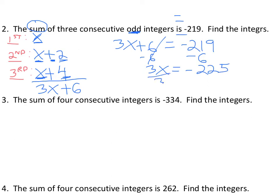Then we divide both sides by 3. And let's put this in the calculator. So negative 225 divided by 3 is negative 75.